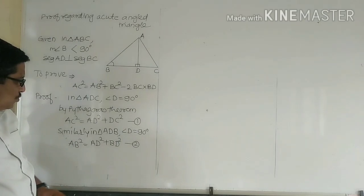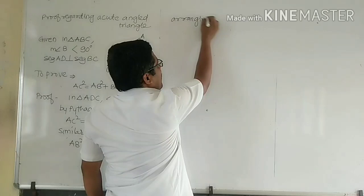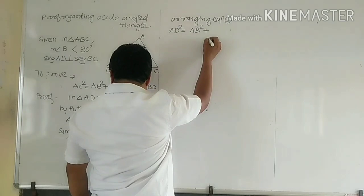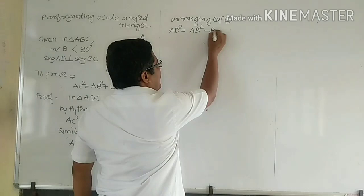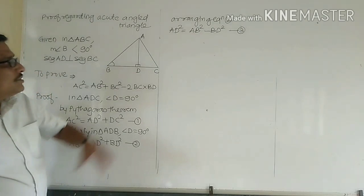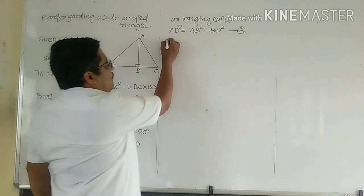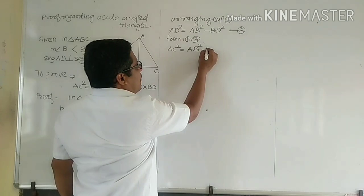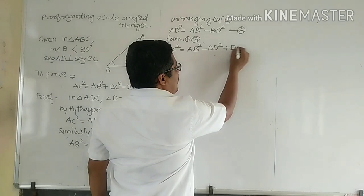In both cases we have AD². So if we arrange equation 2, we get AD² = AB² − BD². Let this be step number 3. Now, this value of AD² we have to place in equation 1. So from equations 1 and 3, AC² = AB² − BD² + DC².